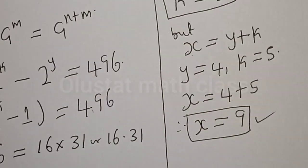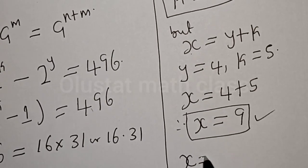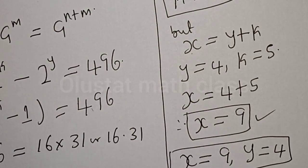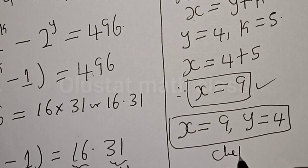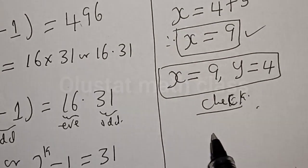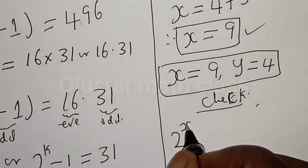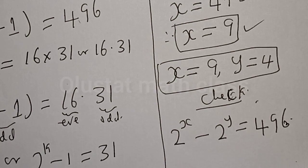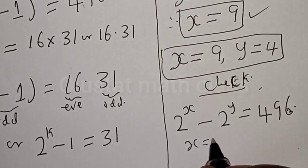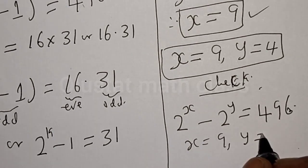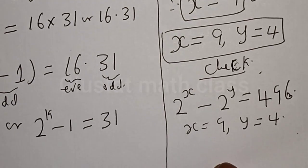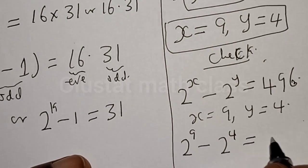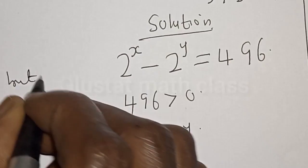We've got the value of x to be equal to 9. Our answers are: x is equal to 9, y is equal to 4. We can check to confirm if our answer is right. We have the original equation: 2 raised to power x minus 2 raised to power y is equal to 496. We know x is equal to 9 and y is equal to 4.